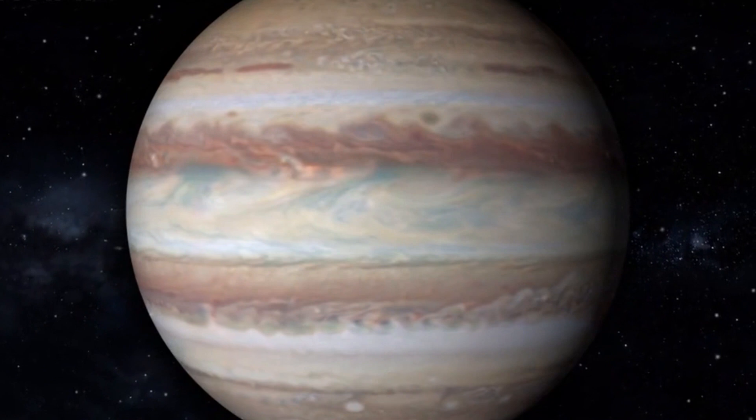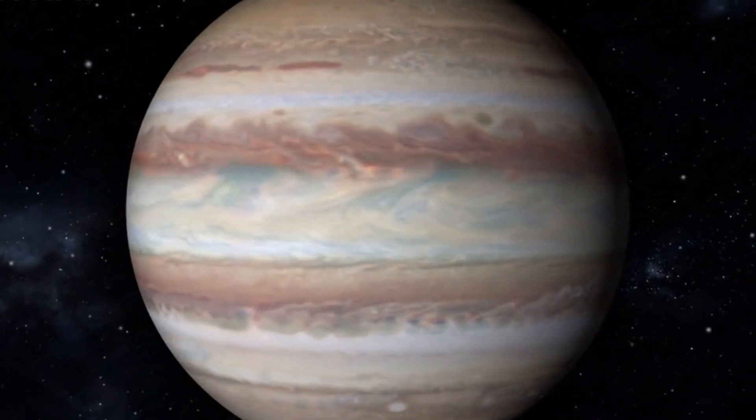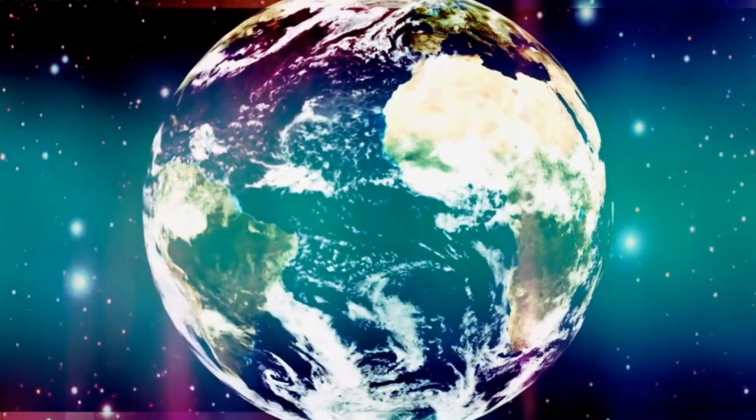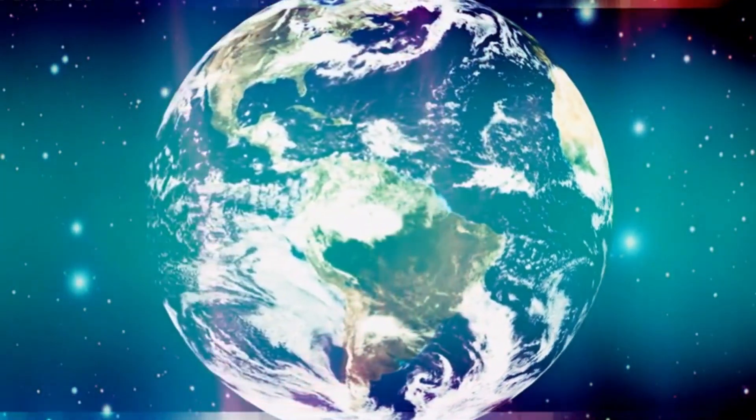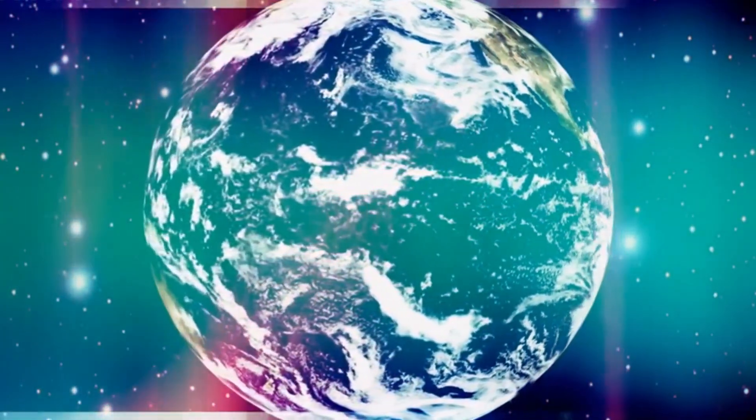Scientists are continuing to study Haller, hoping to uncover more about how planets might survive the turbulent life cycles of stars. Then there's LTT 9779b, a planet that also bends the rules of planetary formation.